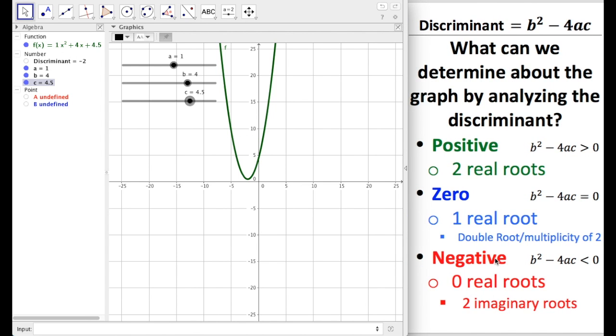One last task for you. I want you to play around with the sliders a little bit more until you find three examples when the discriminant is a positive perfect square. I want you to notice something. Notice what you see about the roots when we have positive perfect squares. See you back in a minute.